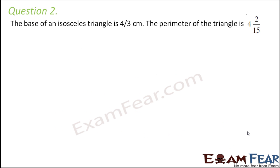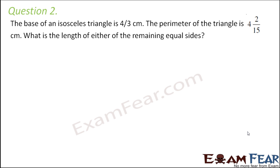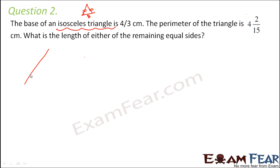Question number 2. The base of an isosceles triangle is 4/3 centimeters. The perimeter of the triangle is 4 and 2/15 centimeters. What is the length of either of the remaining equal sides? A quick recap: an isosceles triangle has two equal sides. The two equal sides and the base make up the triangle, and the base here is 4/3 centimeters.